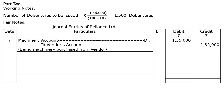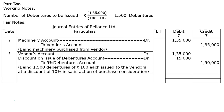Next, we will issue 1500 debentures to the vendor at a discount of 10% in satisfaction of purchase consideration. Vendor's Account debited Rs. 1,35,000; to 9% Debentures Account Rs. 1,50,000 (credit); and Discount on Debentures Account Rs. 15,000 (debit), being 1500 debentures of Rs. 100 each issued to the vendor at a discount of 10% in satisfaction of purchase consideration.